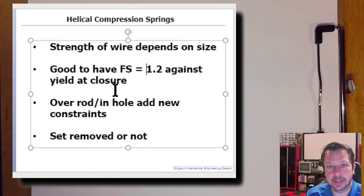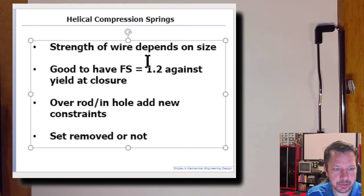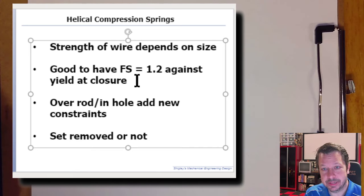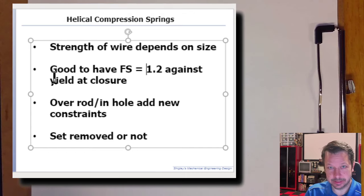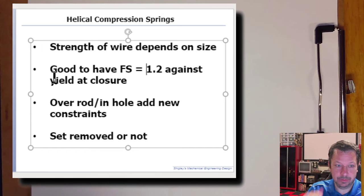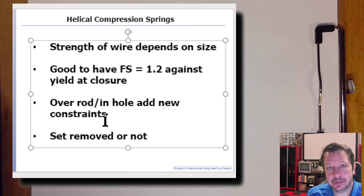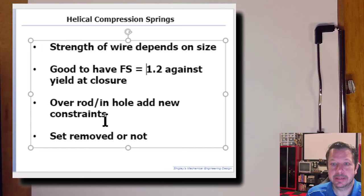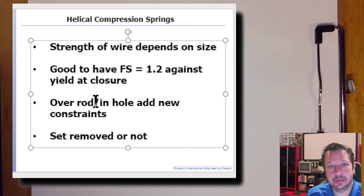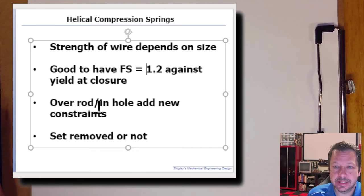Our design won't necessarily need that factor of safety because it would be impossible for the spring to close without other parts of the car breaking. But in general, you want a factor of safety against yielding if the spring can compress all the way. Sometimes springs are in a hole or over a rod — a hole gives a maximum diameter constraint, a rod gives a minimum diameter constraint. In our case, a shock absorber goes through the center of the coil.